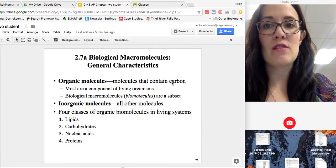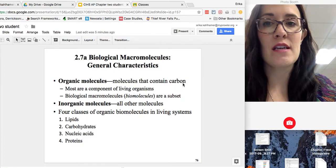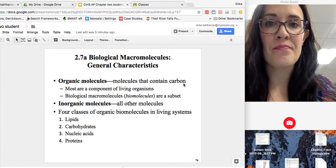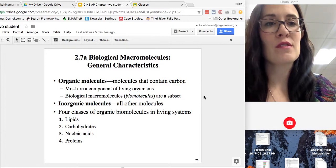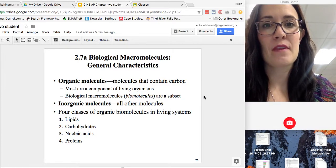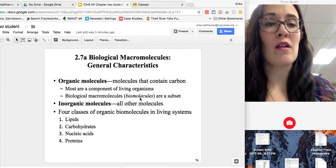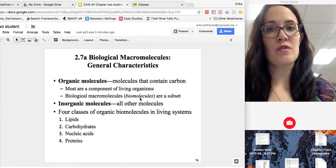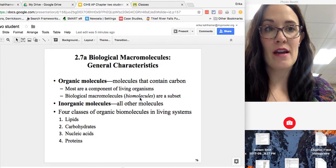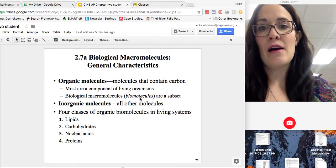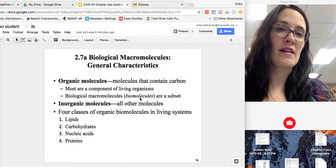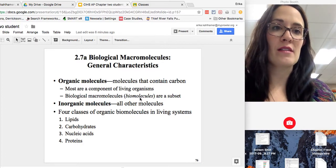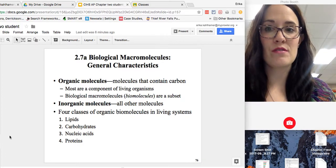So the difference: organic molecules are molecules that contain carbon, the element carbon, and most are components of living systems. Biological macromolecules, or biomolecules, which we'll talk about, are a subset of organic chemistry. Inorganic are all other things, like water, for example, which is also important.